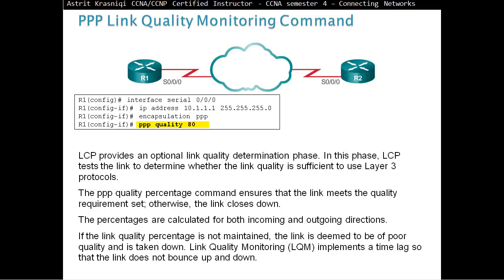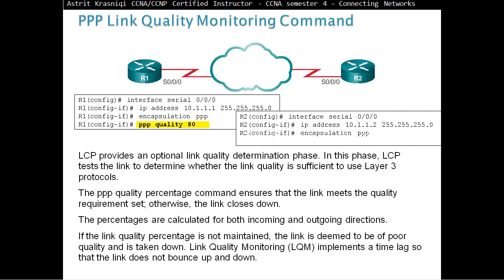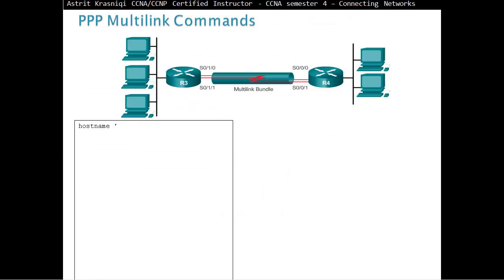If the Link Quality Percentage is not maintained, the link is deemed to be in poor quality and it's taken down. The Link Quality Monitoring, LQM, implements a time lag so that the link does not bounce up or down. You have to configure this on the other side as well. The Multi Link — a very cool command — lets you bundle two Serial Links into one. We can bundle multiple links into a Multi Link Bundle to increase our bandwidth.